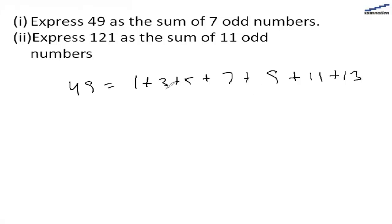When we add all these numbers, these are seven numbers, and when we add them they will give us 49, which is basically 7 squared.